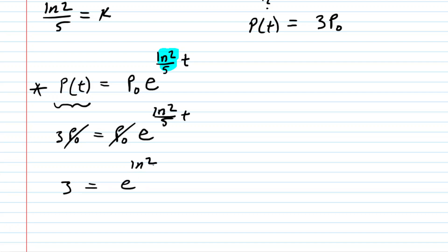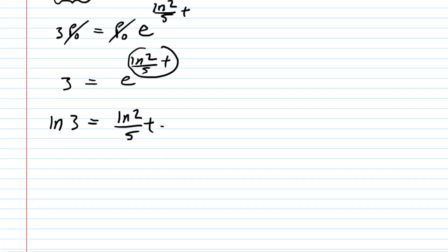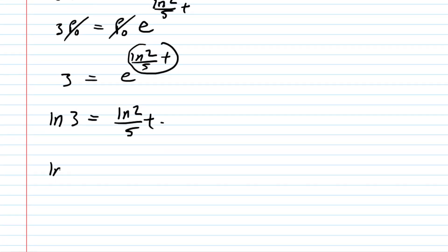And now we're getting very close to solving for the time required to triple the population. Take the natural log on both sides. You can bring this exponent down. You'll be multiplying that by the natural log of e, which is just 1. And then to solve for t, just divide both sides of this equation by ln(2)/5. And then let's grab our calculators to see what that roughly equals.